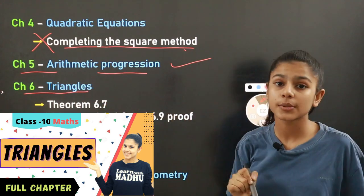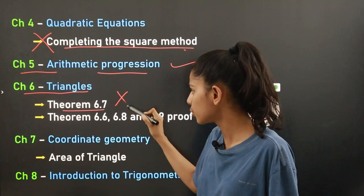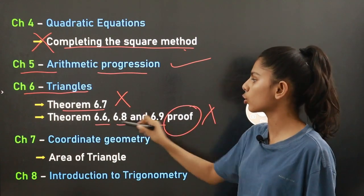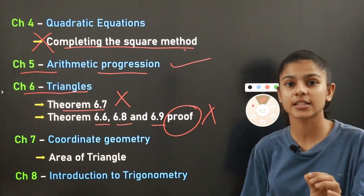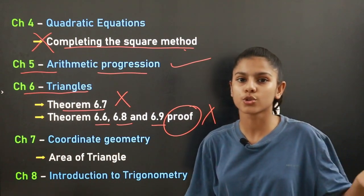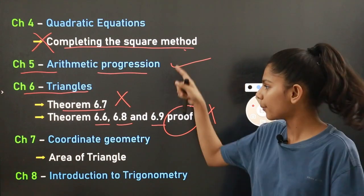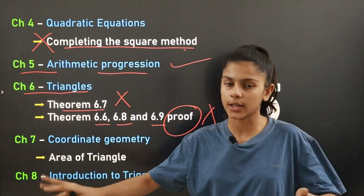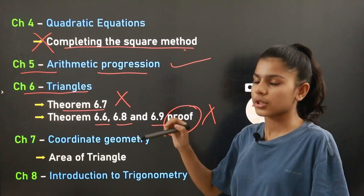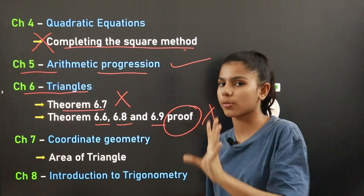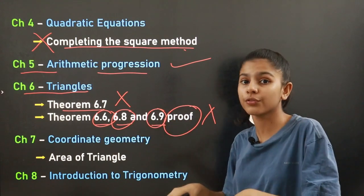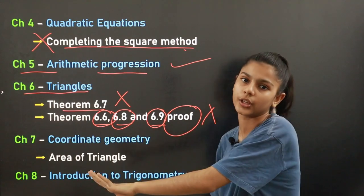Chapter number six is Triangles. Theorem 6.7 has been fully reduced — no questions will be based on it. For theorems 6.6, 6.8, and 6.9, the proofs have been removed, meaning you do not have to prove these theorems. Pay close attention to which topics are reduced so you don't get confused during your exam preparation.